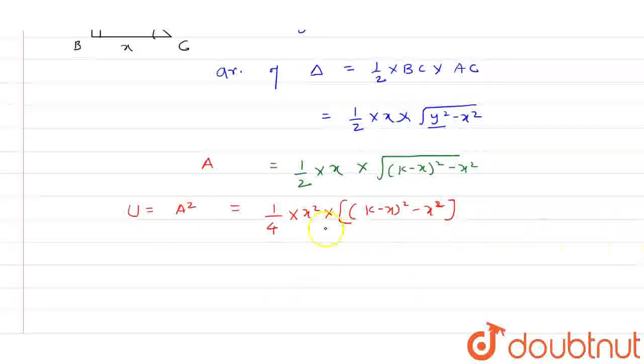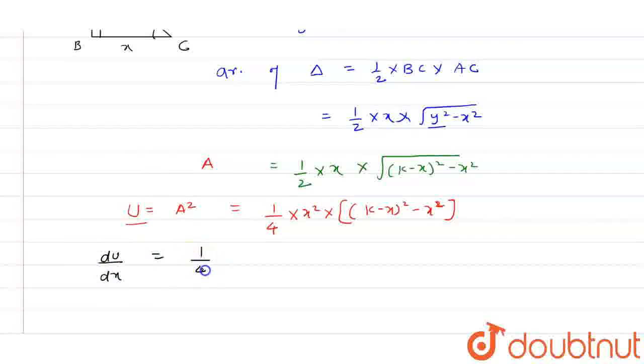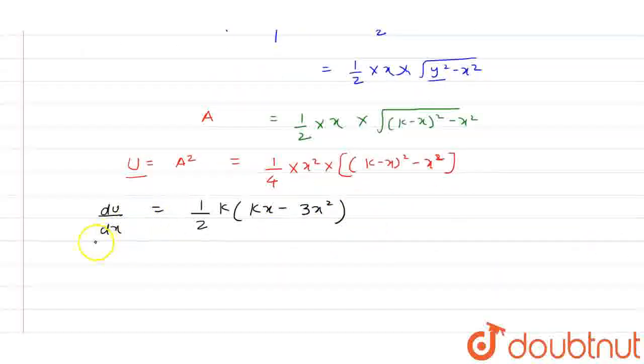Now if we differentiate this U with respect to X, we get dU/dX equals 1/4 times 1/2 K, K minus 3X squared. Now if we differentiate dU/dX another time we get d²U/dX² equals 1/2 K, K minus 6X.